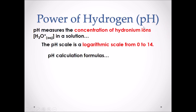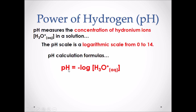The power of hydrogen, pH, is a measure of the concentration of hydronium ions in a solution. The pH scale is a logarithmic scale from 0 to 14, with 0 being very acidic and 14 being very basic. The pH calculation formula is: pH is equal to the negative log of the concentration of H₃O⁺ in a solution. This can be rearranged to: the concentration of H₃O⁺ is equal to 10 to the exponent negative pH.